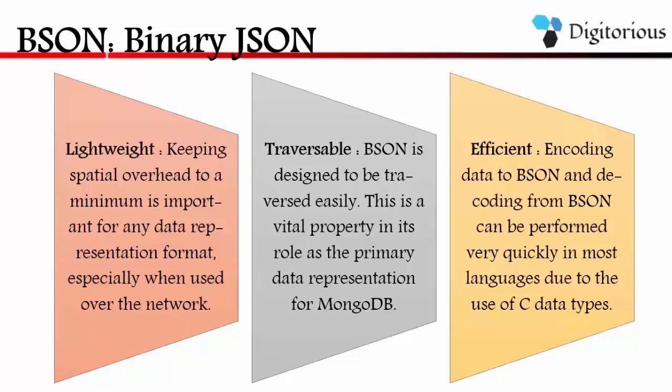BSON specification has three goals. The first one is efficiency, which means BSON is designed to represent the data efficiently without using much extra space. Then traversable — in some cases, BSON does sacrifice space efficiency to make the format easier to traverse.